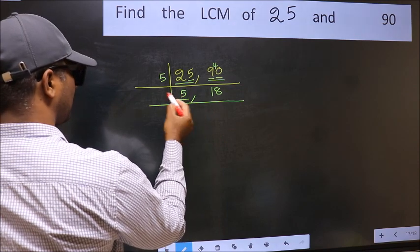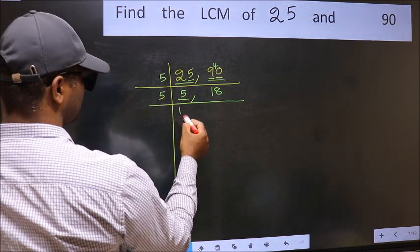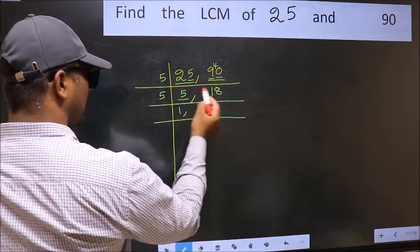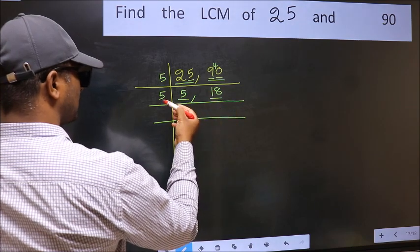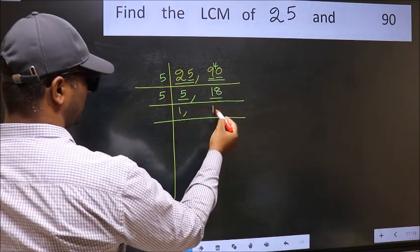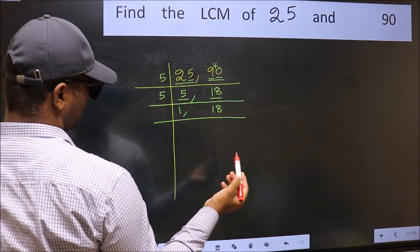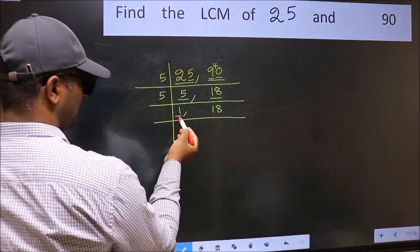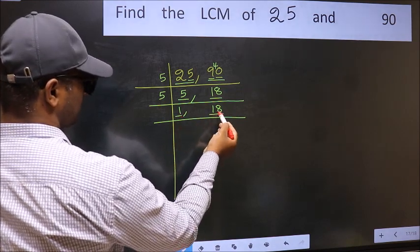Now here we have 5. 5 is a prime number, so 5 times 1 is 5. The other number, 18, is not divisible by 5, so you write it down as it is. Now we got 1 here. So focus on the next number, 18.